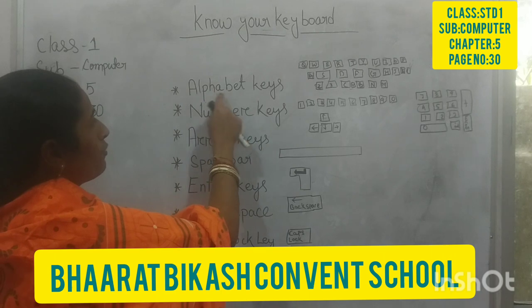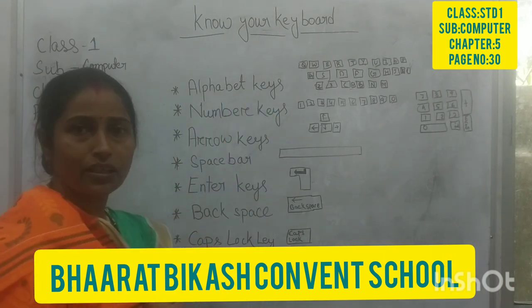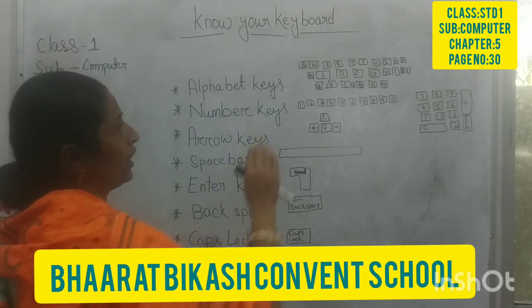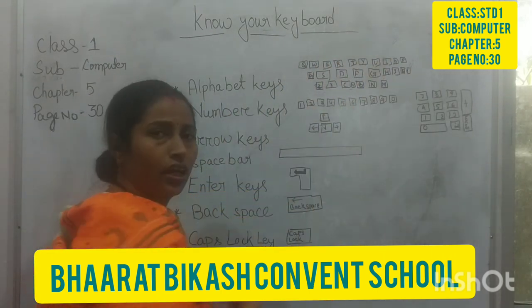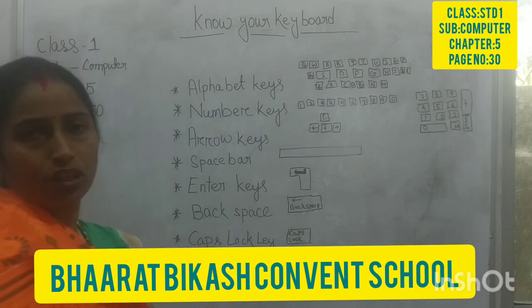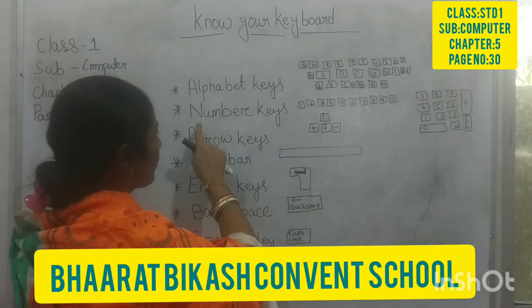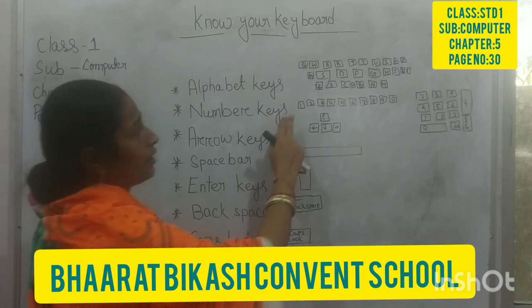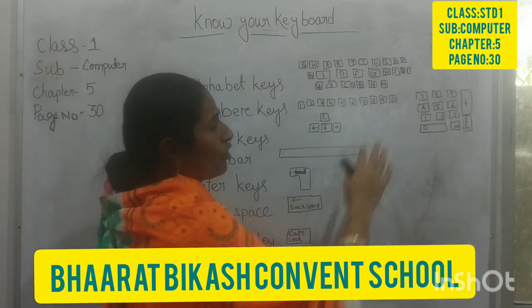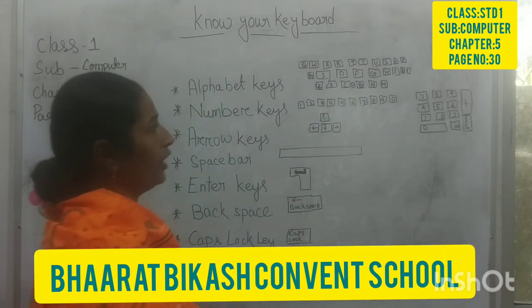See, alphabet keys — that means alphabets: A, B, C, D, E, F, G, H. You know what alphabets are. Alphabet key. Number key — number key has numerical numbers: 1, 2, 3, 4 and so on.